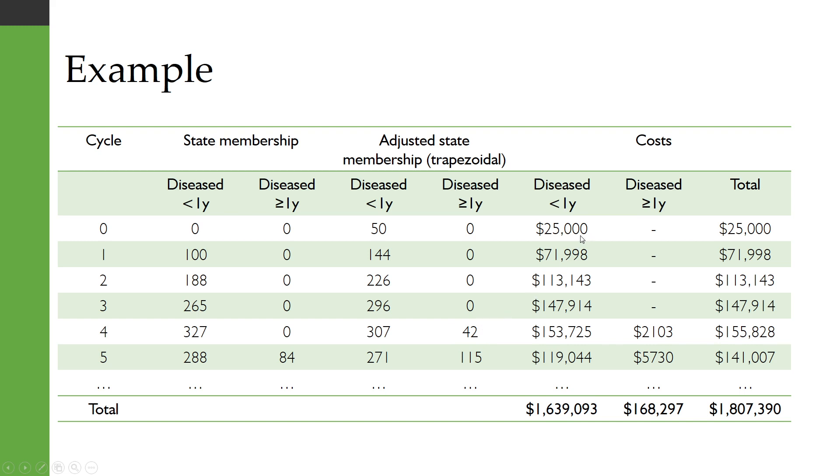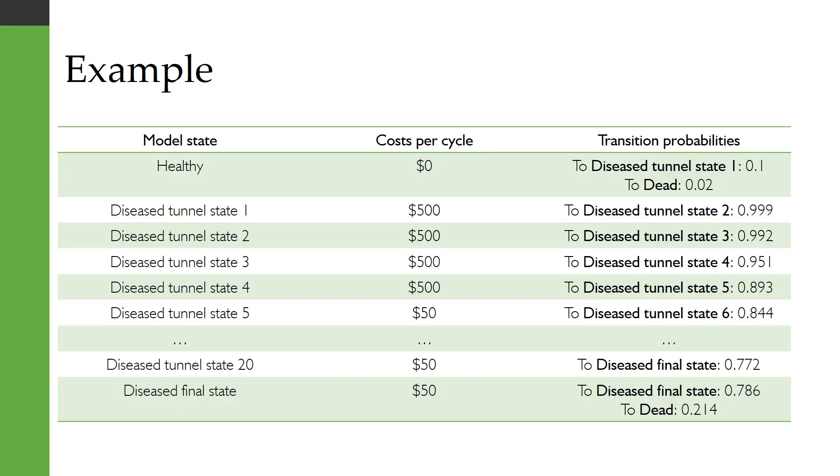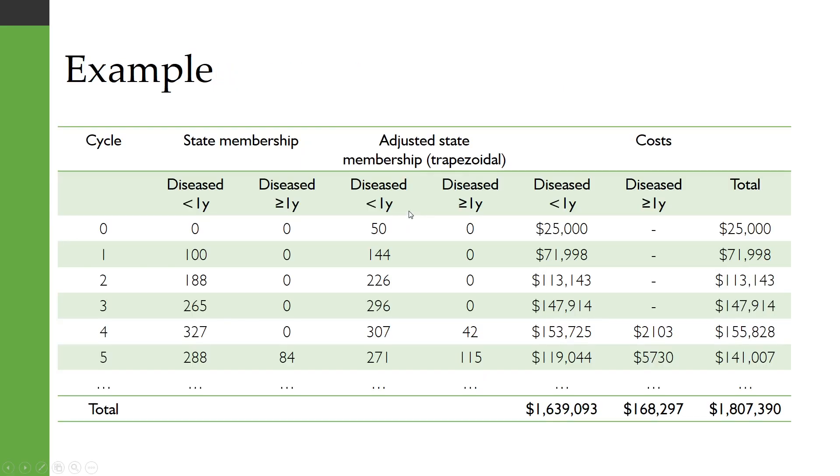Okay and then we calculate our costs accordingly. So everybody who is in the short-term disease state is going to be incurring costs at $500 per cycle and if they're long-term diseased it's going to be $50 per cycle and so you'll see that most of the costs come from that short-term disease state but there is a small contribution from the longer-term disease state.